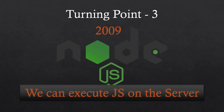The next turning point is Node.js — this is the most important one. Previously we could only run JavaScript inside the browser, on the client side. The engineer Ryan Dahl did some research and came up with Node.js, which allows us to execute JavaScript on the server. He used the same V8 JavaScript engine from Google Chrome and embedded it with some C and C++ code to create a new JavaScript runtime environment called Node.js. From 2009, we have been running JavaScript on the server as well.